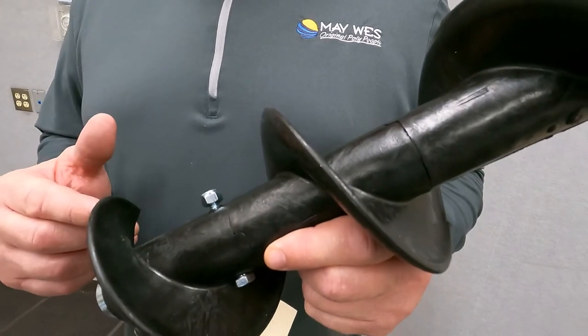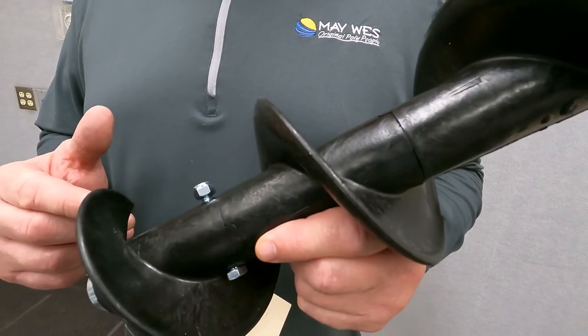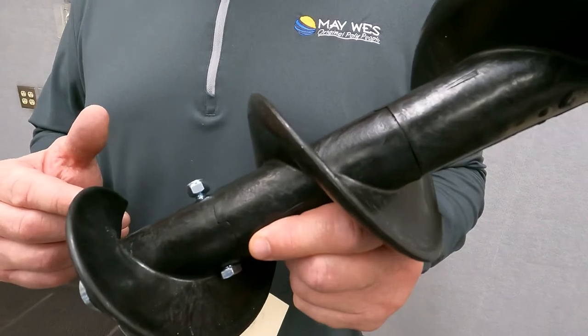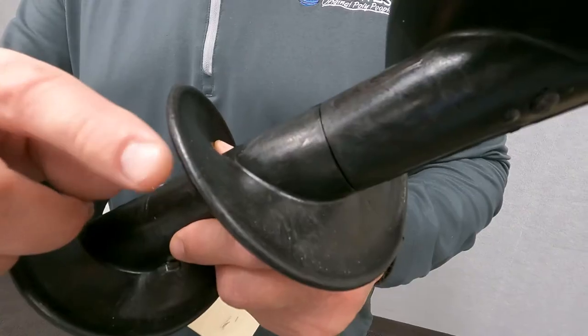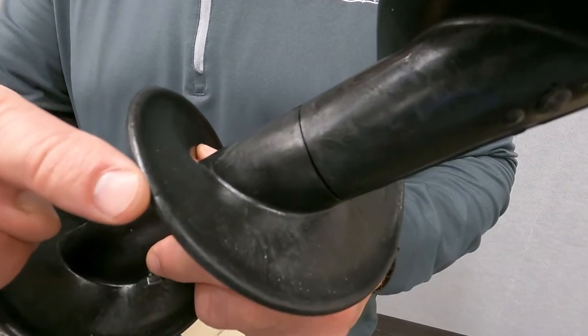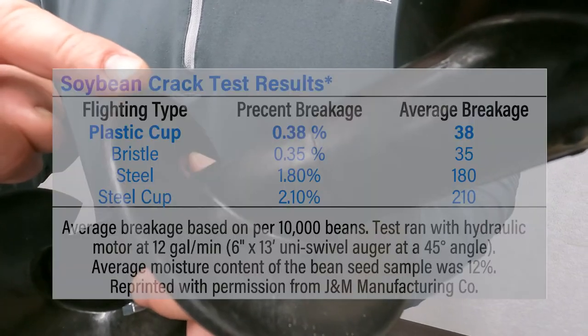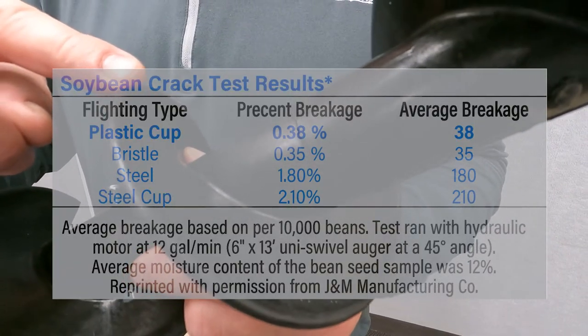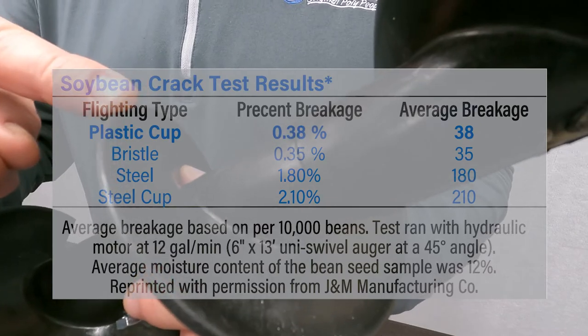People often ask what's the difference between poly cup flighting and poly straight flighting. As you can see, poly cup flighting has a cup to it, making it ideal for gently handling grains and seeds to reduce breakage.